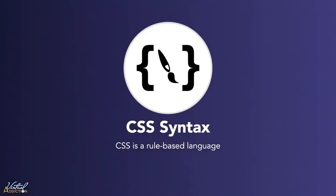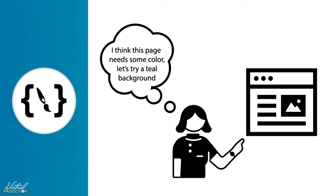CSS is a rule-based language. You define rules specifying groups of styles that should be applied to a particular element or group of elements on your web page. For example, I want the main heading on my page to be shown as large red text. Or, let's change the background color on this page to something else.